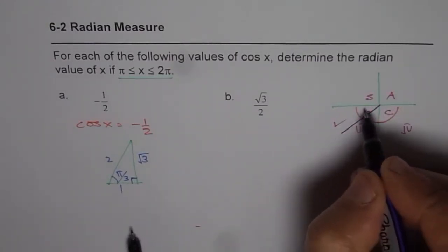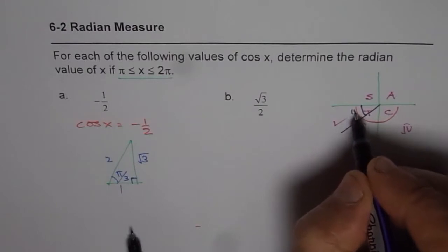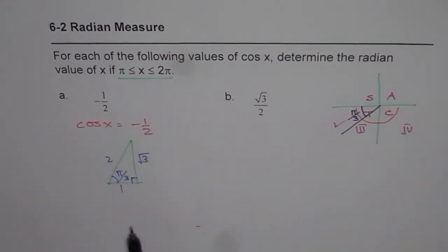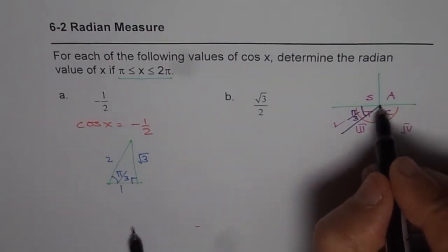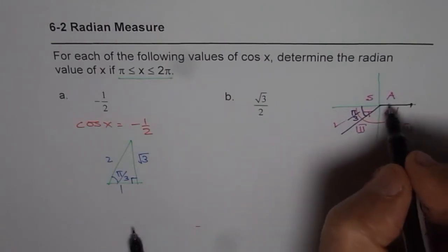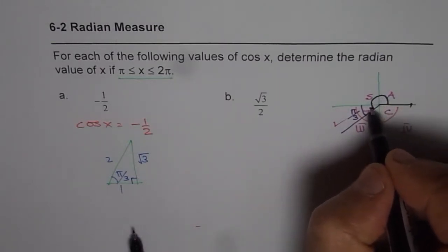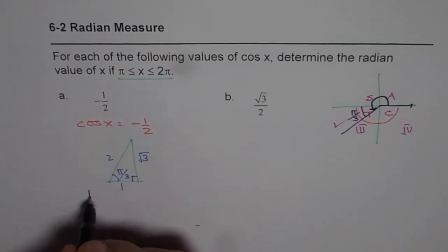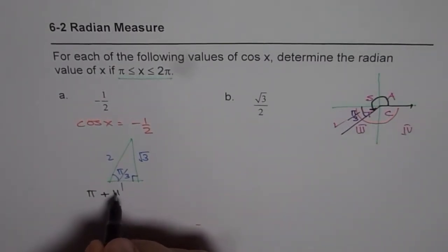Let me draw one here. This angle is π/3. What we need to find is the principal angle. It's always from the positive x-axis. So the principal angle is π plus π/3.